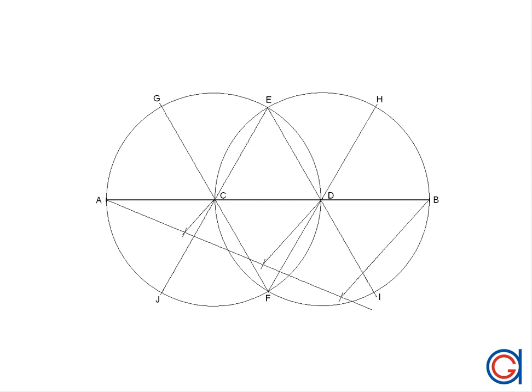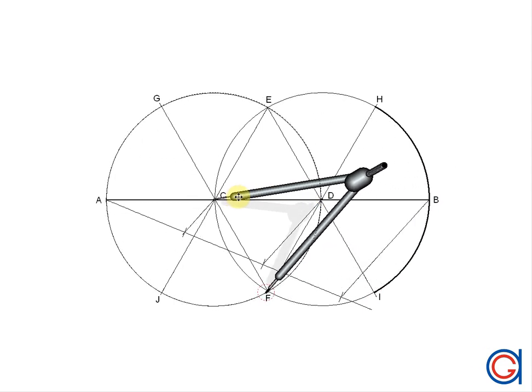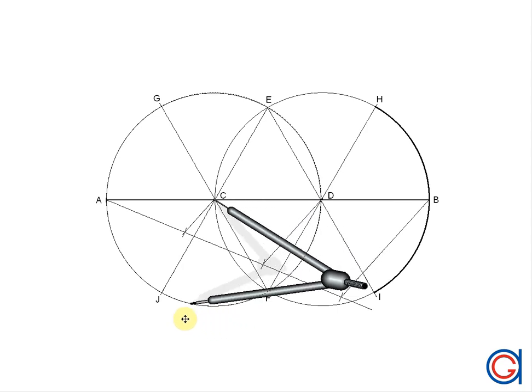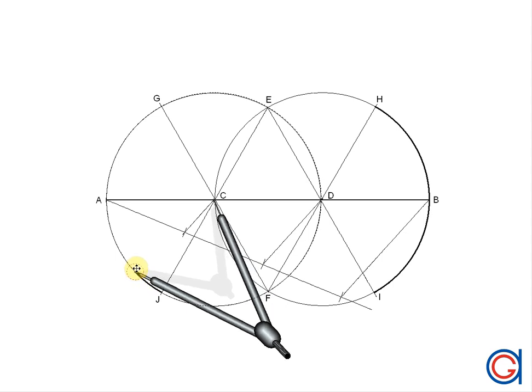The next step we are going to draw the first two arcs of the oval. First one centered in point D and radius DB we join points H to I in a thicker line. And now with our compass set on point C and radius CA we join points J to G in a thicker line again.